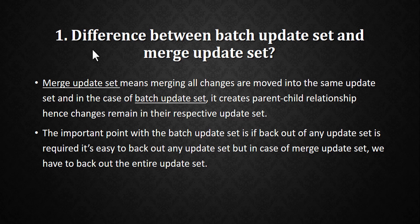Merge update set means merging all changes into the same update set. In case of batch update set, it creates a parent-child relationship, so changes remain in their respective update sets. In merge update set, we are merging all update sets into a single update set, while in batch update set it creates a parent-child relationship with one parent update set and all related child update sets.